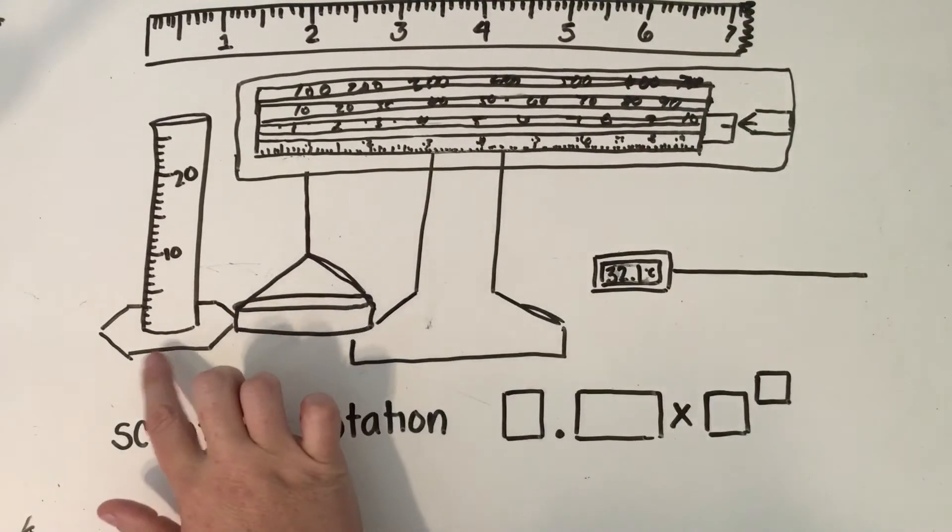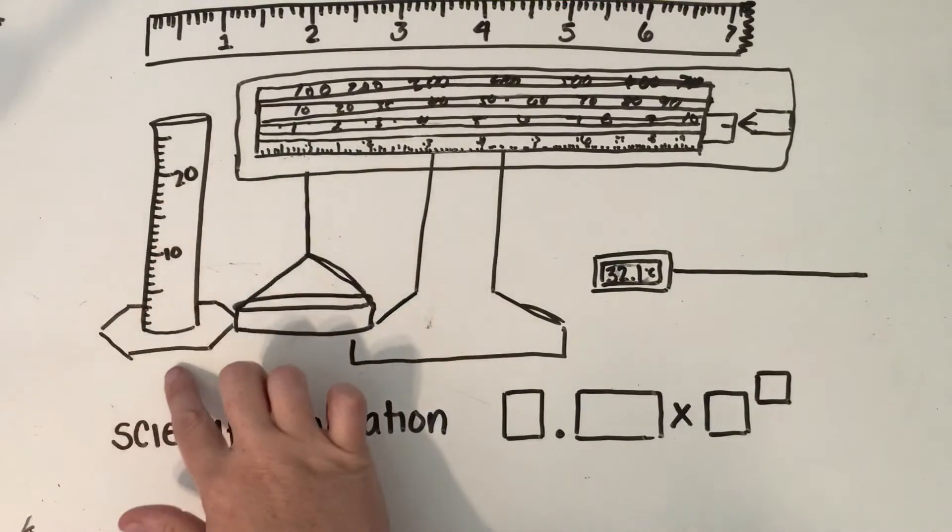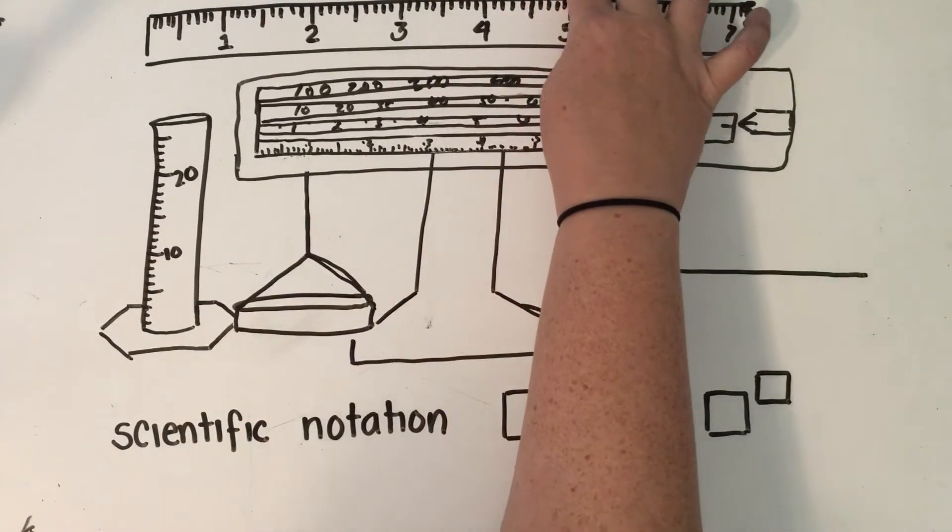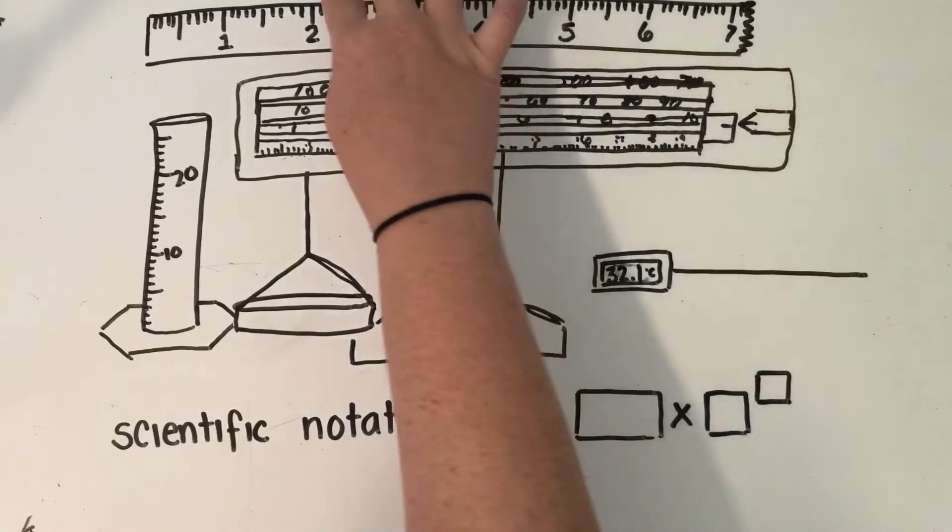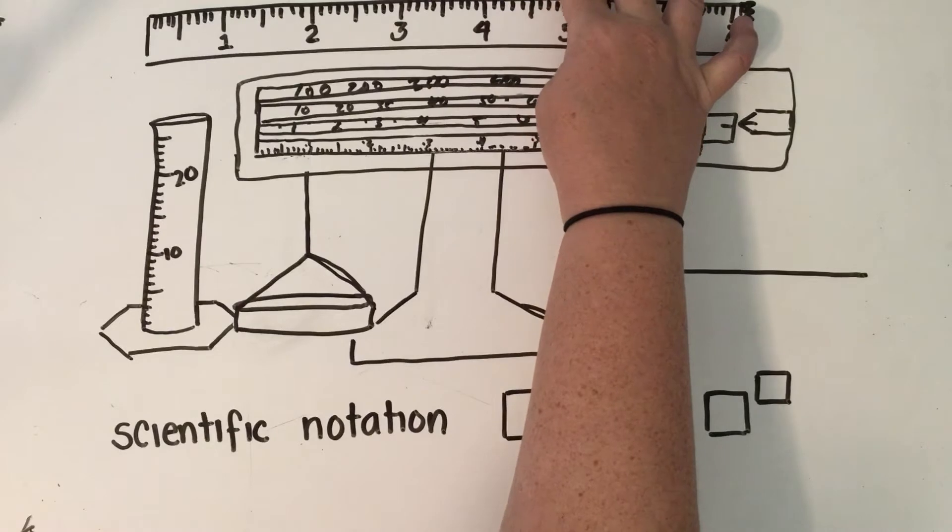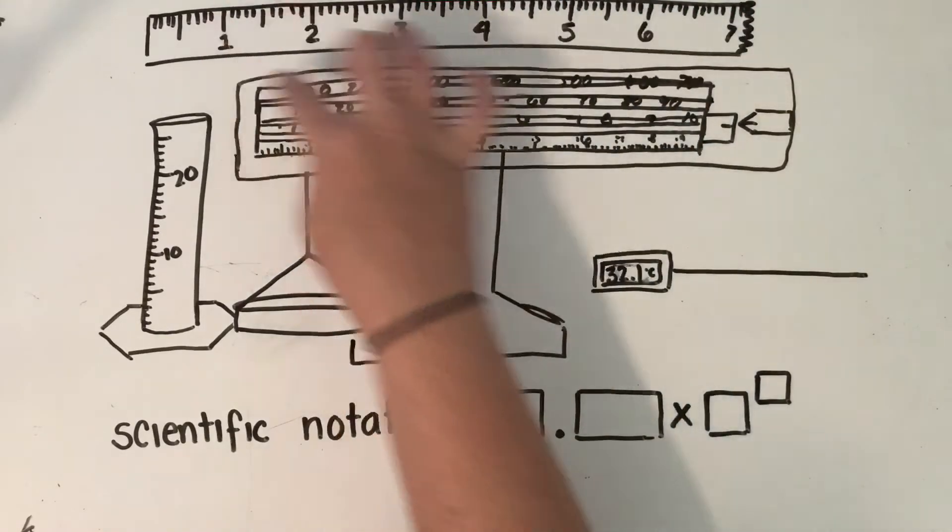We're going to be using graduated cylinders or maybe even beakers, they're a little less precise, but that would be to measure our volumes of solutions. Now if we're trying to take the volume of a solid we might actually go back to our meter stick or our ruler and measure the sides in centimeters, and then when we multiply length times width times height we would get a unit of cubic centimeters.